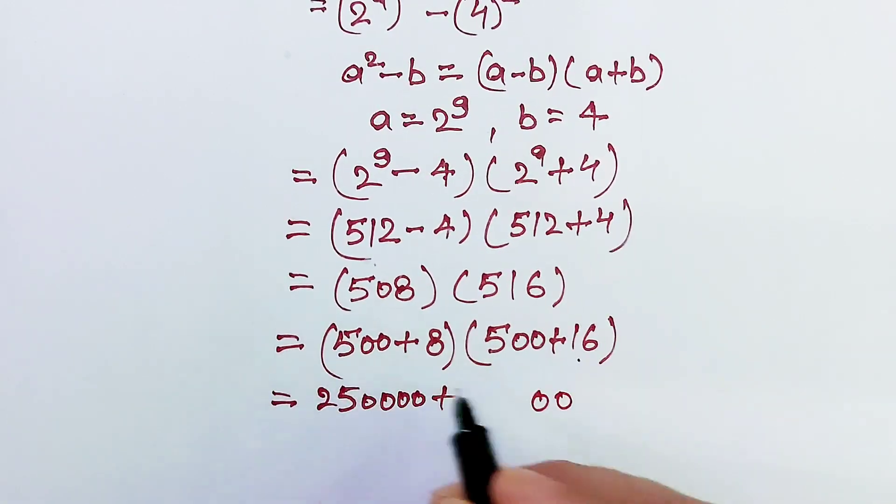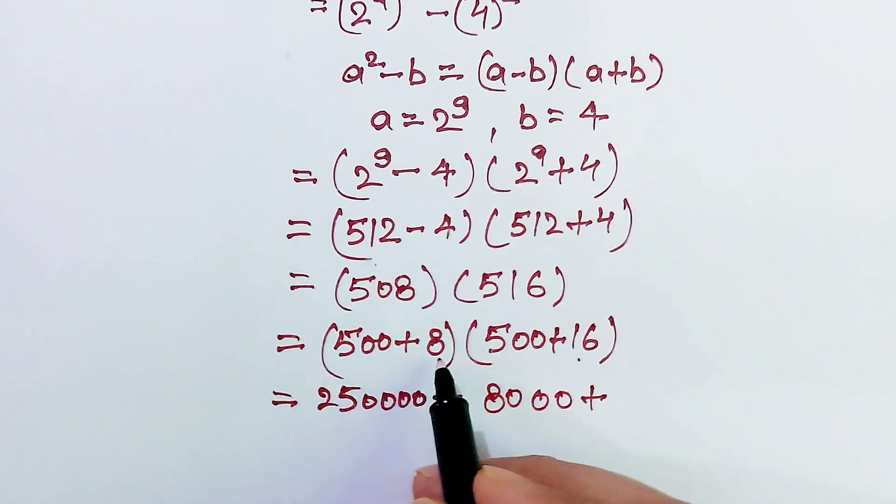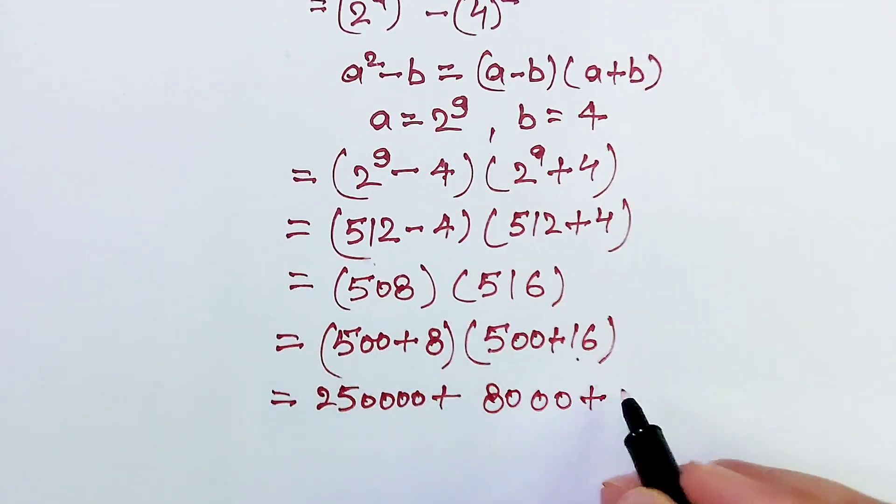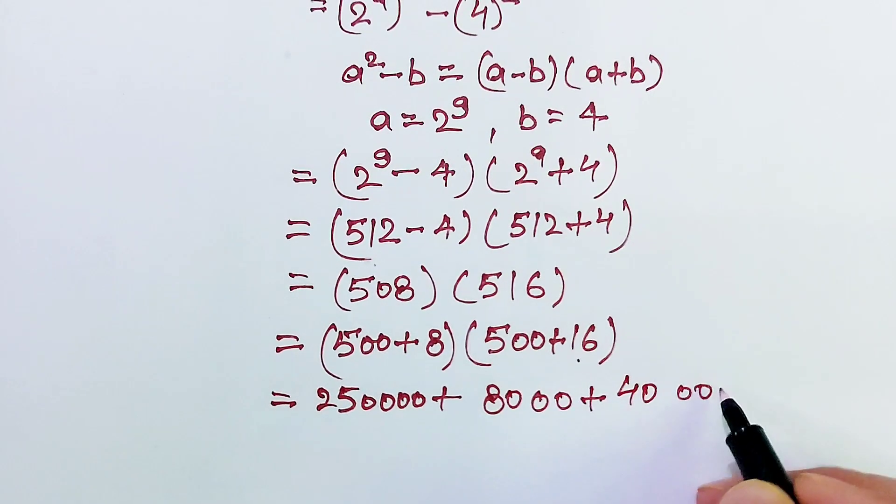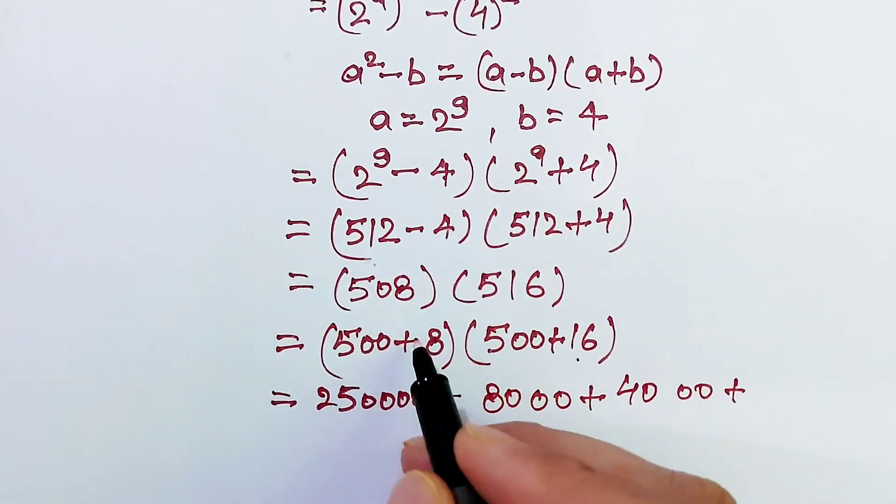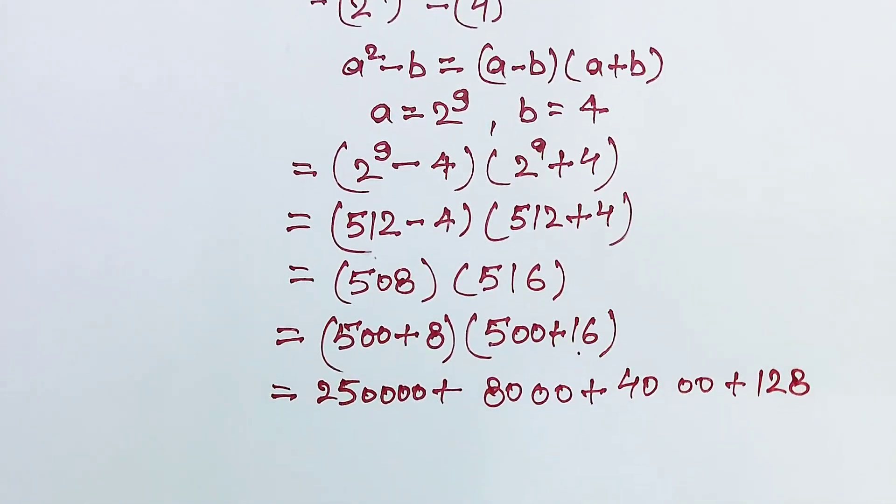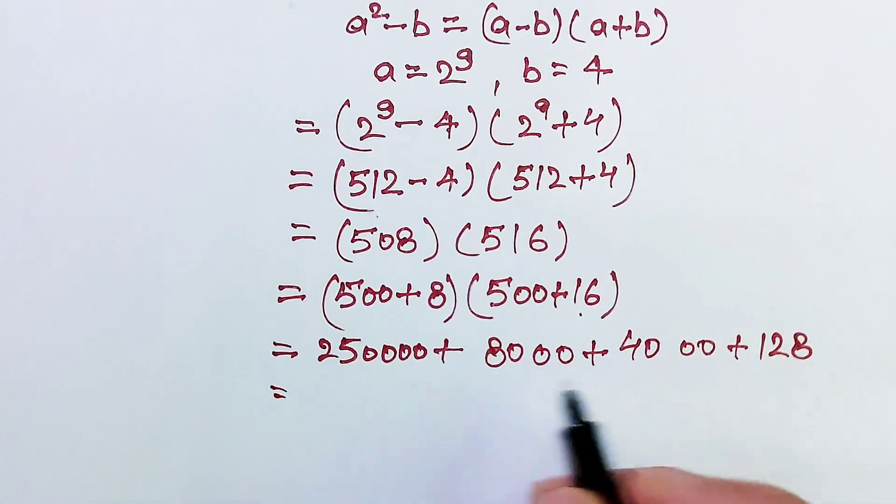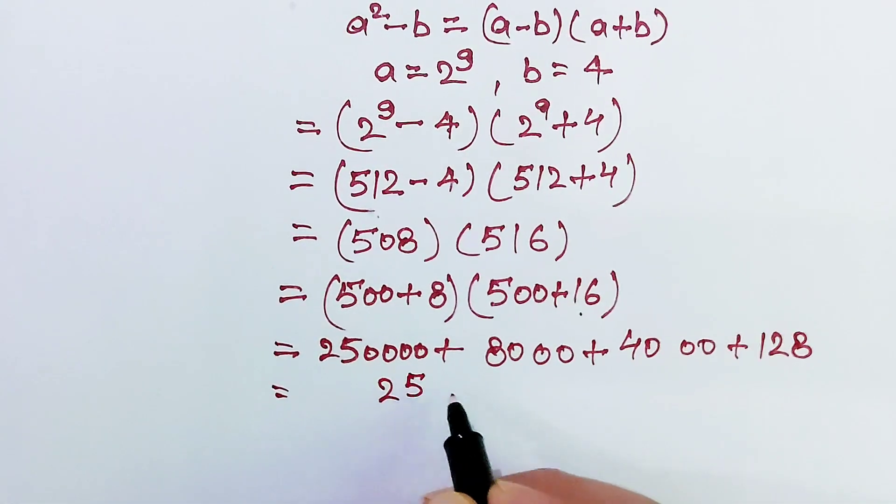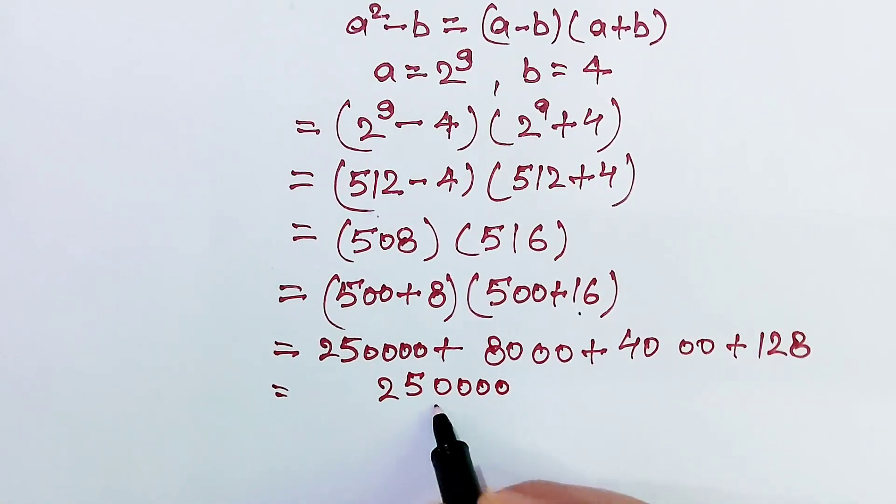0 0 0, 8000 plus 500 with this 8, 0 0 8, 4000 plus 8 into 16, 128. Now add these 4 terms. 2 5, 4 times 0 is 0, 8 here 8.